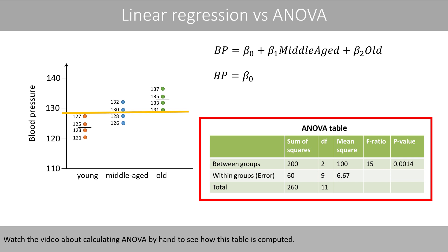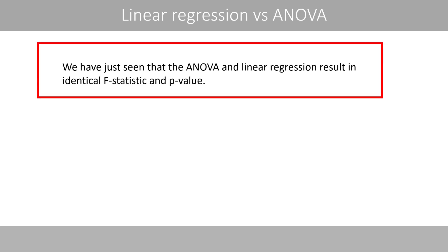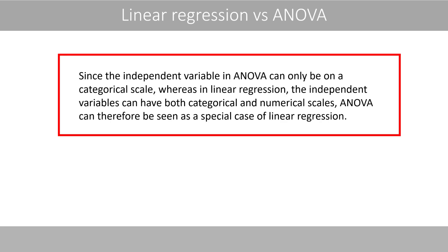Watch the video on calculating ANOVA by hand to see how this table is computed. We have just seen that ANOVA and linear regression result in identical f-statistic and p-value. Since the independent variable in ANOVA can only be on a categorical scale, whereas in linear regression the independent variables can have both categorical and numerical scales, ANOVA can therefore be seen as a special case of linear regression.